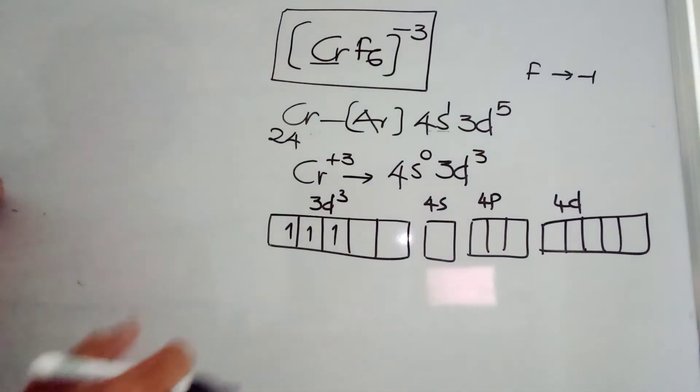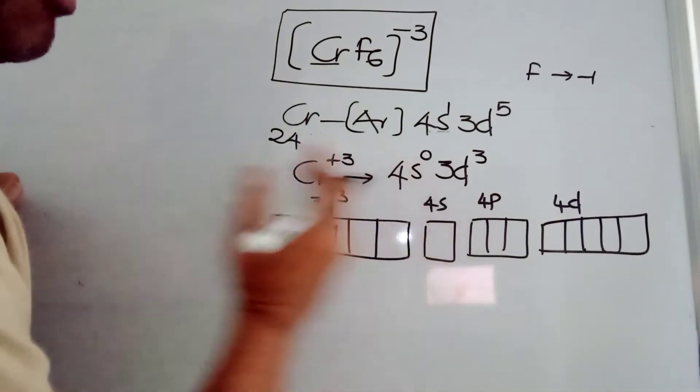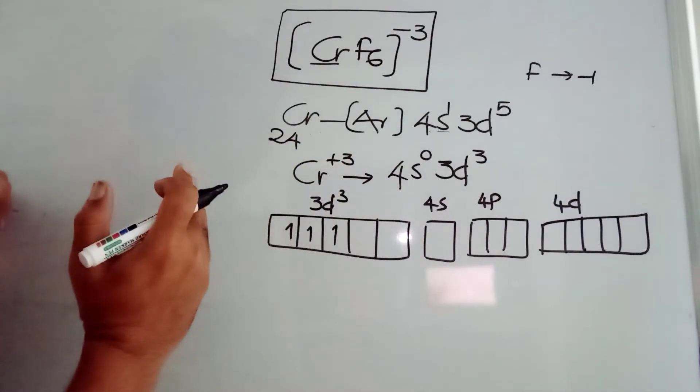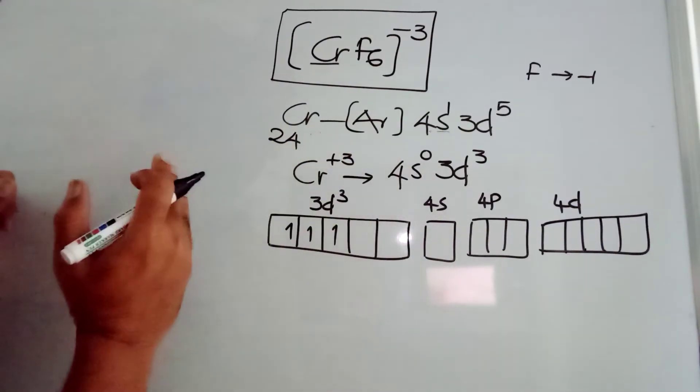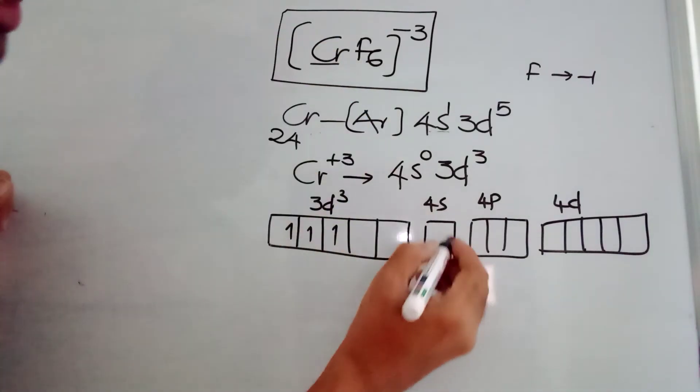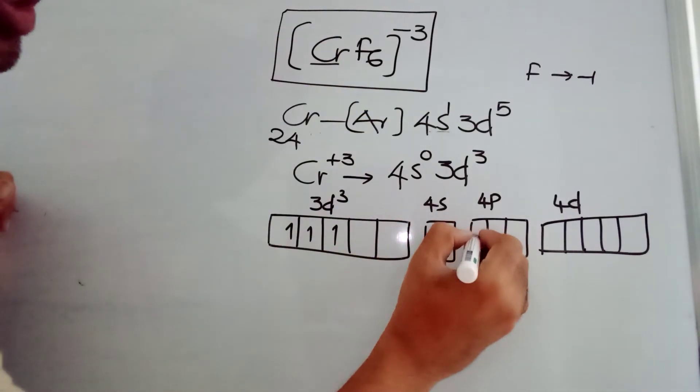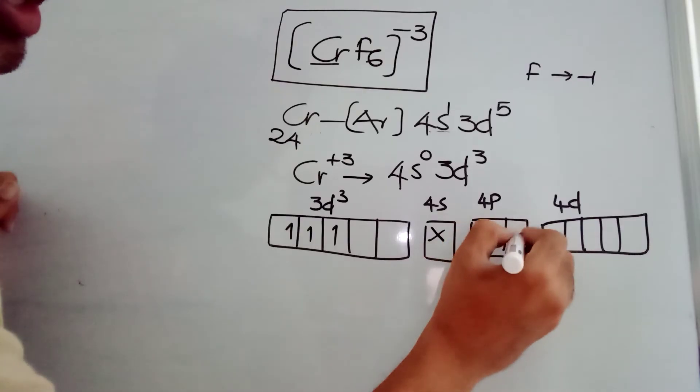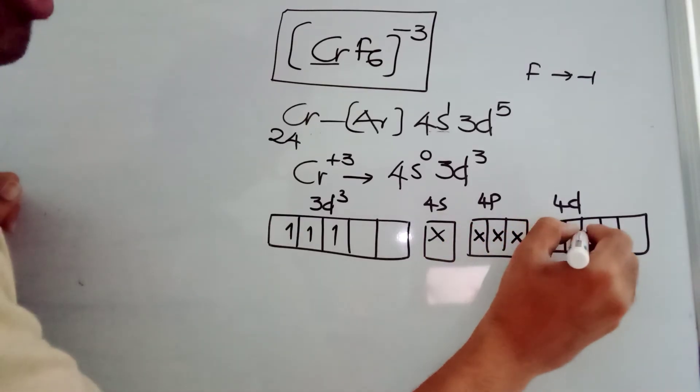Weak-field ligand never comes into the inner energy, inner orbitals. You can see inner energy orbitals. So, 6 fluorides are going to come: 1, 2, 3, 4, 5, and 6.